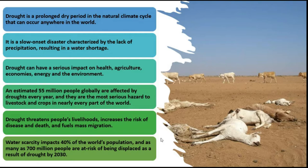When there is less water flow in streams, water reservoirs will have less water and less energy generation. The environment gets impacted as various plants and animals dependent on water are affected, reducing biodiversity. An estimate from the United Nations states that 55 million people globally are affected by droughts every year, and they are the most serious hazard to livestock and crops in nearly every part of the world.